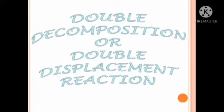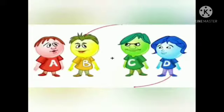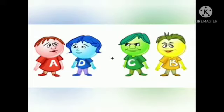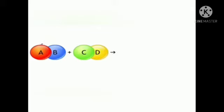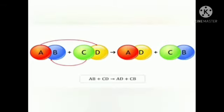Next is the double decomposition reaction. In this type of reaction, both reactants or compounds decompose to give two new compounds by exchanging their radicals. They are also called double displacement reactions. Here, compound AB combines with compound CD, and new compounds are formed when D comes in place of B and B comes in place of D, giving AD and CB, formed by exchanging their radicals.